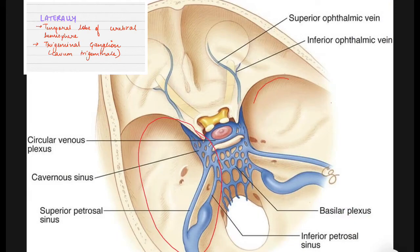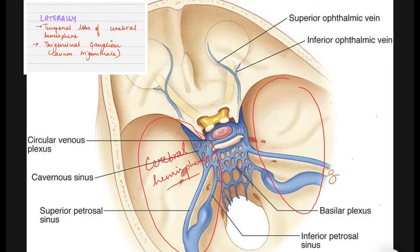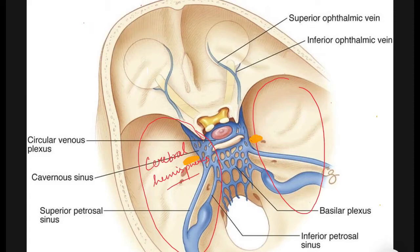For lateral relations of the cavernous sinus, there are the temporal lobes of the cerebral hemispheres, and the cavernous sinus contains the trigeminal ganglion. The trigeminal ganglion is present exactly beside the cavernous sinus.